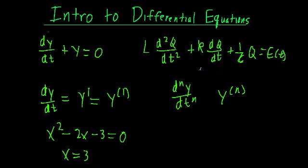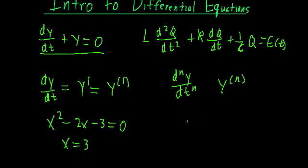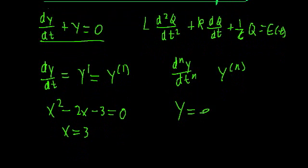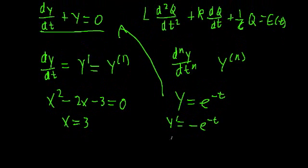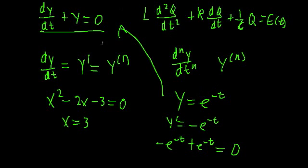Going back to this example, we can test whether y equals e to the negative t is a solution to the differential equation dy/dt plus y equals zero. Don't worry about how we got this — we'll get to that later. Taking the derivative of y, we get y-prime equals negative e to the negative t. Plugging back in, we get minus e^(−t) plus e^(−t), which equals zero. So this function satisfies the differential equation — hence it is a solution.